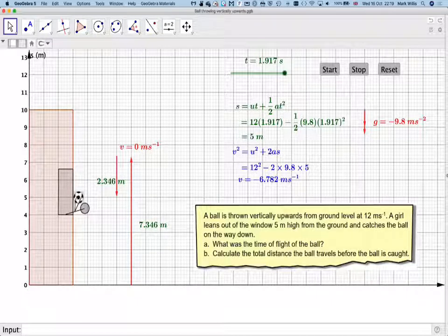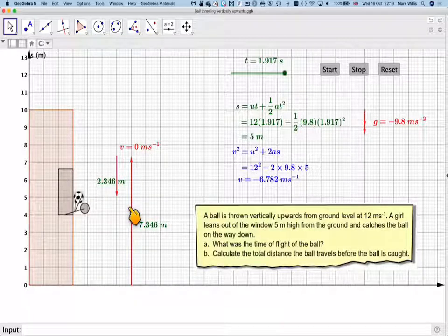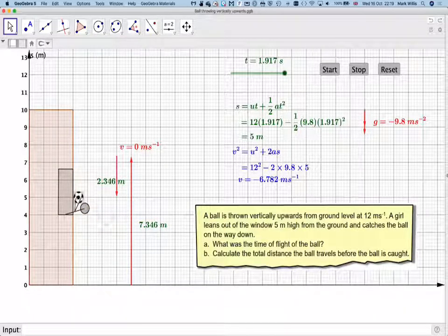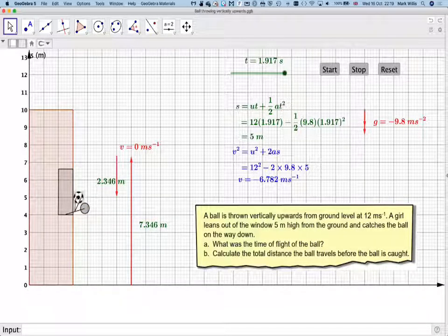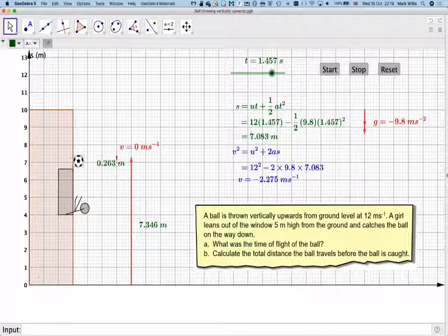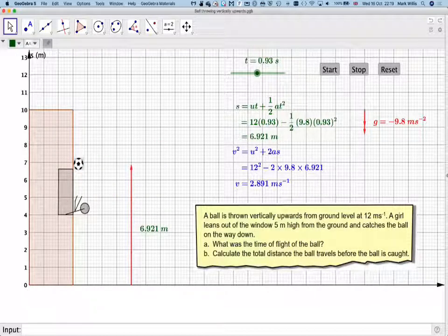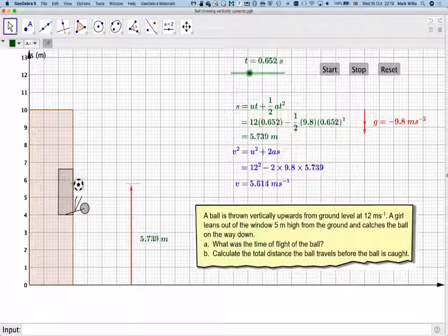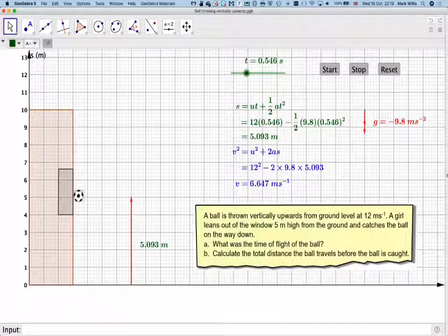Okay, so at this particular point here, there will be the same value of t. One will be about 1.92 and the other will be when s is 5 on the way upwards, which is around there somewhere.